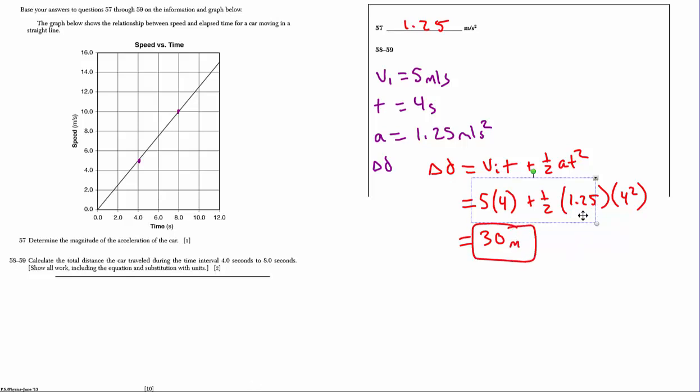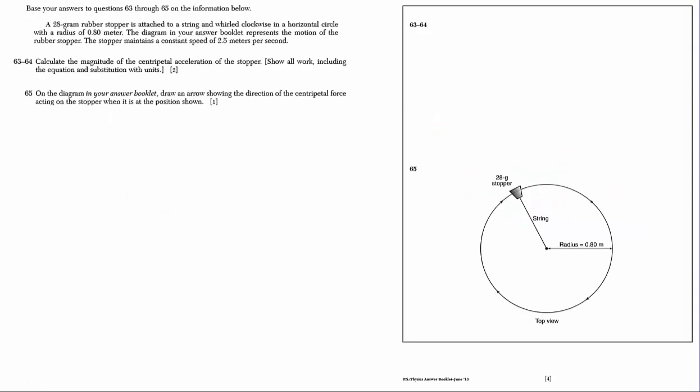You could have done slope. You could have done a couple different things here. This isn't the only kinematic solution either. You could have broken this up into segments, added it all together. Whatever route you take, I think this one was probably the easiest route. I'm jumping ahead to number 63. This is dealing with a circular motion problem. We've got a 28 gram rubber stopper attached to the string. We're going to roll it into clockwise on a horizontal circular path of radius 0.8 meters. And, we have a diagram. We know the speed of the rubber stopper. We first want to determine the magnitude of the centripetal acceleration of the stopper. We do need to show our work including the equation of substitution with units. Let's make a knowns list of everything.